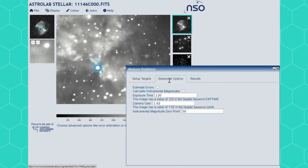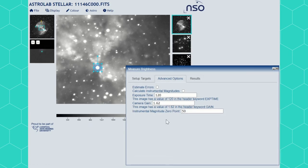If you want to know more details you can explore the advanced options tab. Here it will tell you the exposure time and some information about the instrument setup. These values can be used to turn your brightness in counts into an astronomical magnitude by ticking the calculate instrumental magnitudes box.